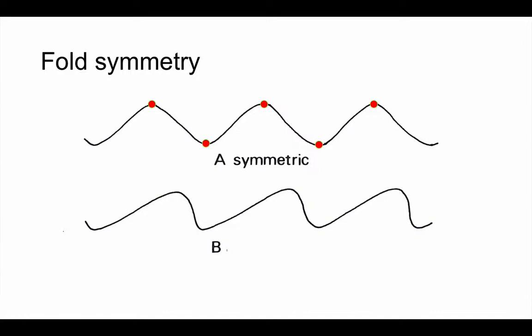If we contrast that with bed B, again if I mark on the hinge points, you'll notice the pattern of hinges here is different. Here the hinges are not equally spaced. The length of the limbs is different. That makes these anti-forms and sin-forms asymmetric.